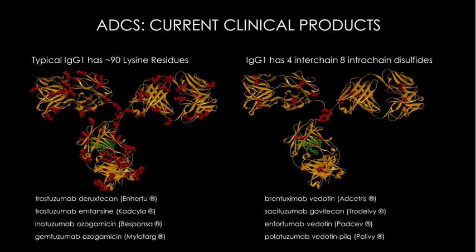Antibodies are a major therapeutic modality used in a number of diseases. In my lab, we're interested not just in antibodies but in what we can do to them. One intriguing format is antibody-drug conjugates — a large macromolecule combined with a small molecule through different linkers, different chemical conjugation strategies, and different payloads. Currently, there are eight FDA-approved ADC products in the United States.